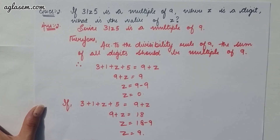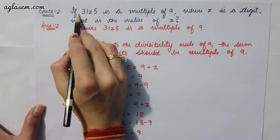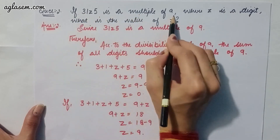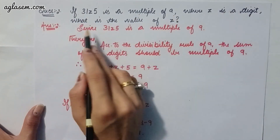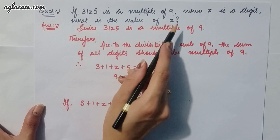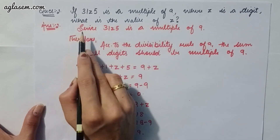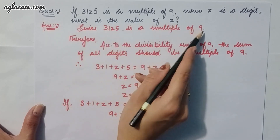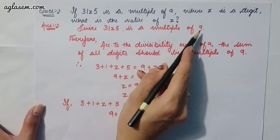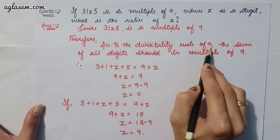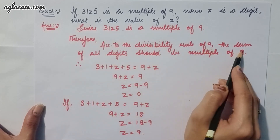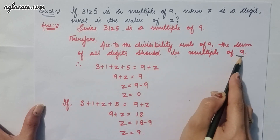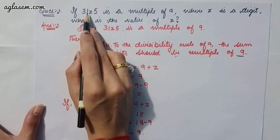Moving to the second question, which says: if 31z5 is a multiple of 9, where z is a digit, what is the value of z? Since 31z5 is a multiple of 9, according to the divisibility rule of 9, the sum of all the digits should be a multiple of 9. That is 3 + 1 + z + 5.